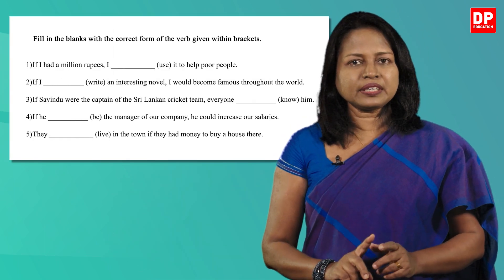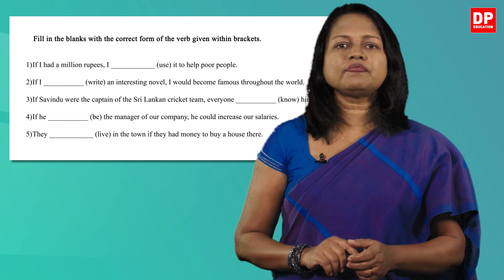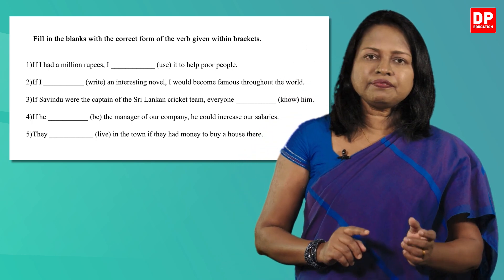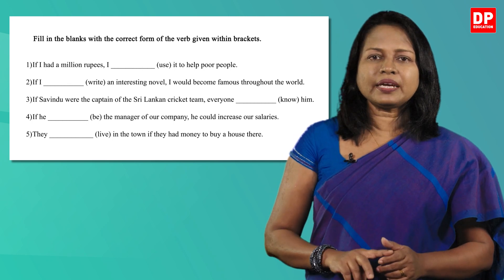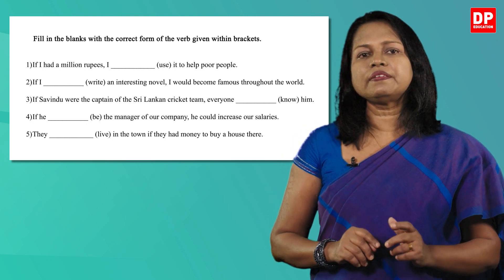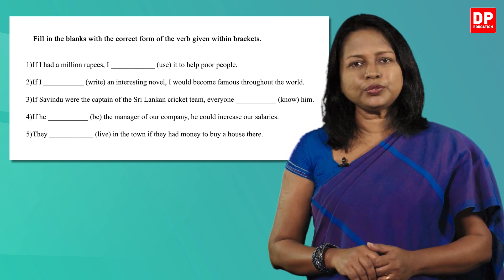Okay children, I hope now you can understand the type 2 conditional sentences. Now let's do an activity to practice what you have learnt. This is activity 5 on page 134 of the textbook. There are 5 sentences with blanks. You have to fill the blanks with the correct form of the verb given within brackets. Pause the video and do it.